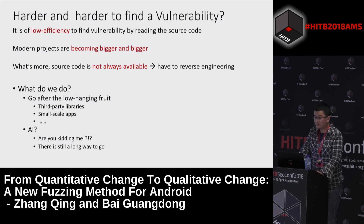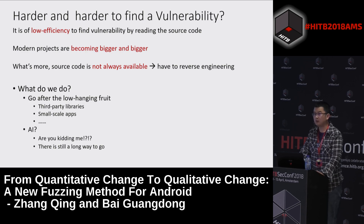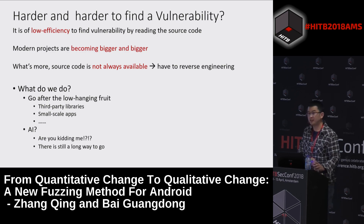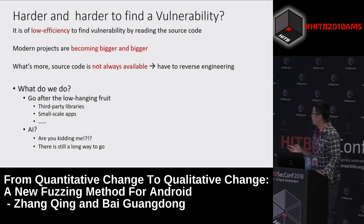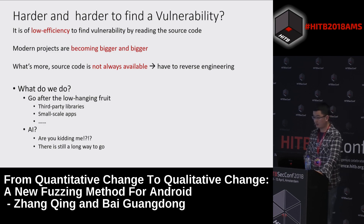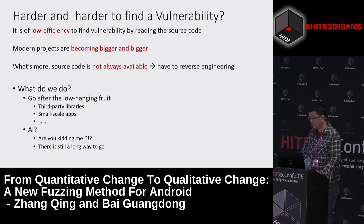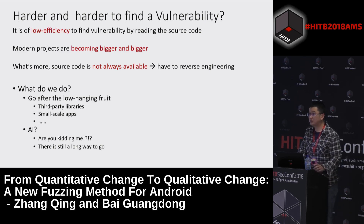It's low efficiency to find vulnerabilities just by reading source code, because modern projects are becoming bigger and bigger, and sometimes source code is not available so you have to do reverse engineering. Some researchers go after low-hanging fruit such as third-party libraries or small-scale applications. Someone also thinks to use AI for vulnerability detection. However, in my opinion, AI is still just a concept in vulnerability detection and there should be a long way to go.